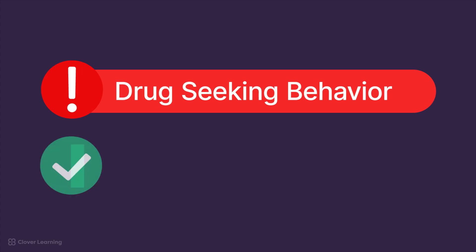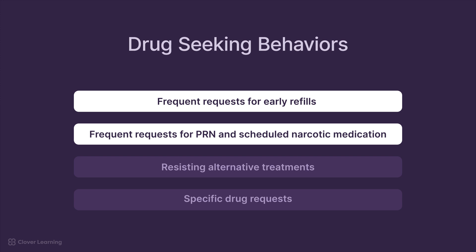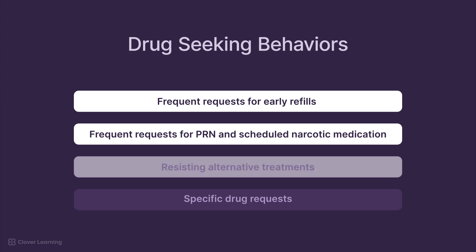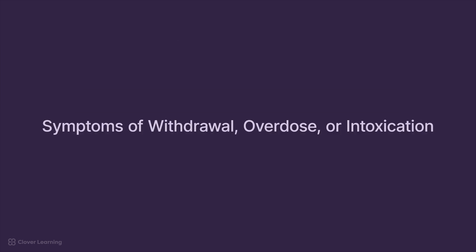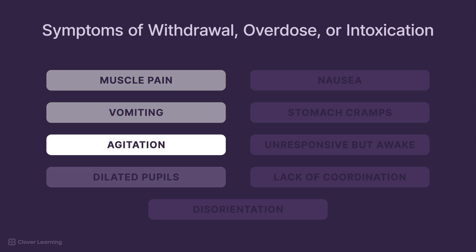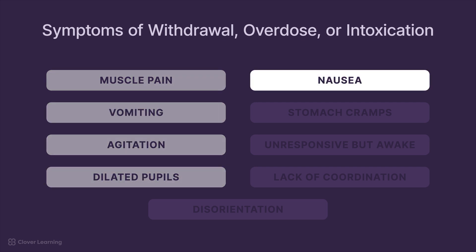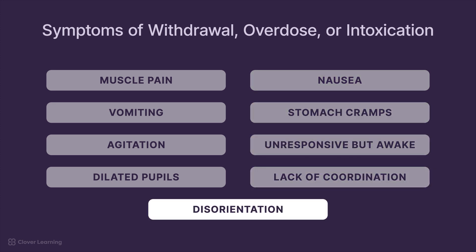It is extremely important to be aware of the signs of drug seeking as opposed to a patient who is in genuine need of a controlled substance. Drug-seeking behaviors include frequent requests for early refills, frequent requests for PRN and scheduled narcotic medication from nursing home residents, resisting alternative treatments, specific drug requests, and visible signs of substance misuse such as symptoms of withdrawal, overdose, or intoxication during visits.